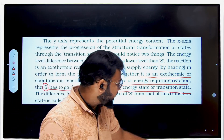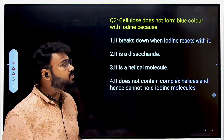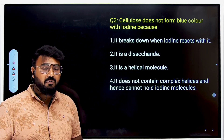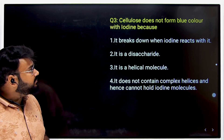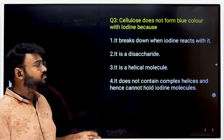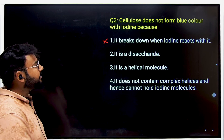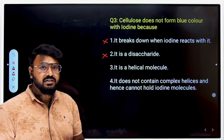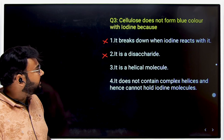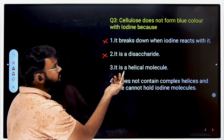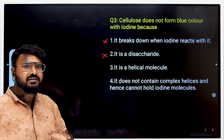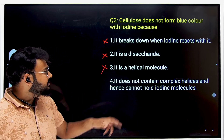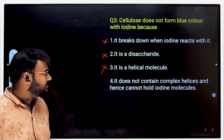The next question: cellulose does not form a blue color with iodine — why? Does it break down when iodine reacts? No. Is it a disaccharide? No, cellulose is a polysaccharide. Is it a helical molecule? Cellulose is not helical — starch is helical. So the correct answer is: cellulose does not contain complex helices and hence cannot hold iodine.